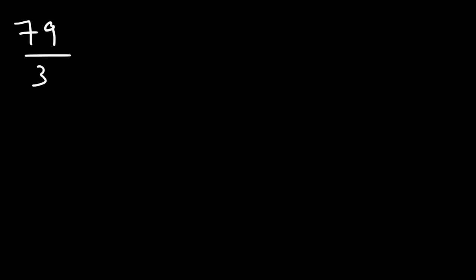So now let's convert this into a mixed number. This time I'm going to use the other method. Multiples of 32 are 32, 64, 96, and so forth. So notice that 64 is the highest multiple of 32 just below 79.